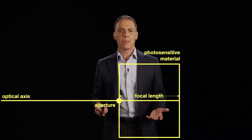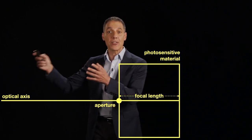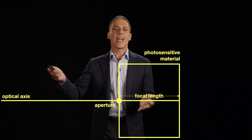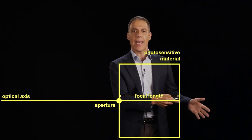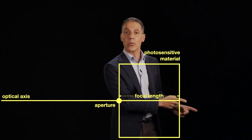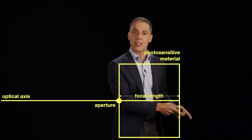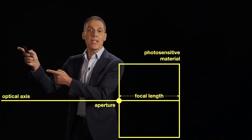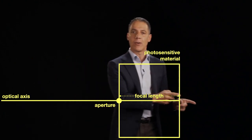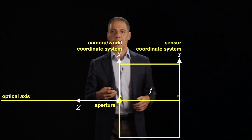We want to be more precise about this, because in computer vision we want to reason about the physical world. We need more precision than just 'rays come in and strike the back.' We need to say: given something in the world at some position, where will it show up in the image — or vice versa, given something in the image, where might it be in the three-dimensional world? So we need some coordinate systems.